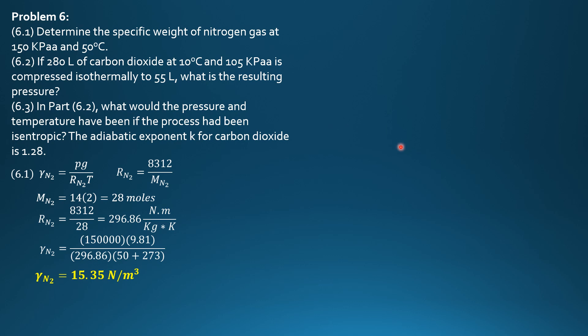Then part 6.2, if 280 liters of carbon dioxide at 10 degrees Celsius and 105 kilopascals absolute is compressed isothermally to 55 liters, what is the resulting pressure?